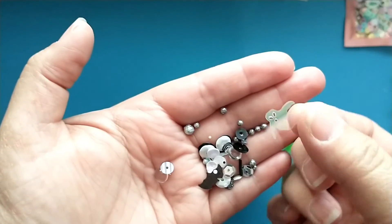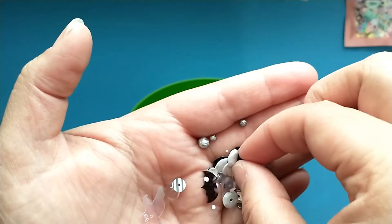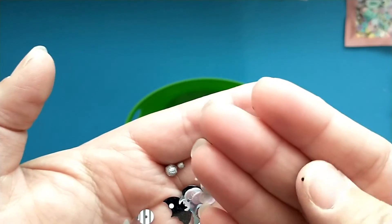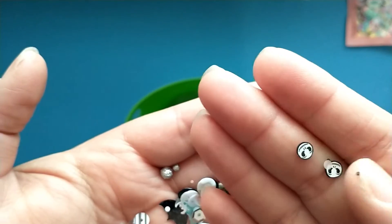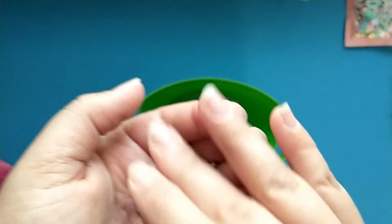You've got the black and white sequins, some little iridescent ghosts, some bats, and then here are the little Jack Skellington clay pieces, which are so cute.